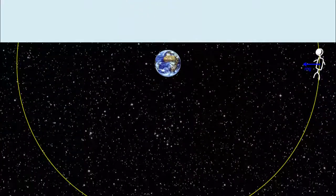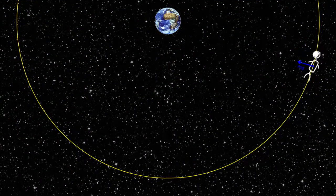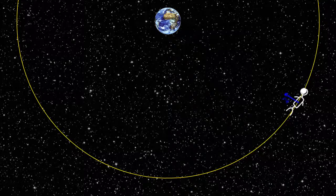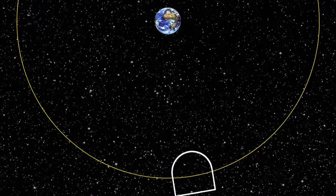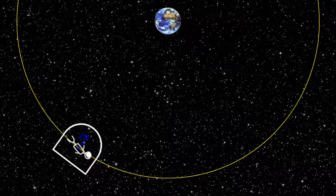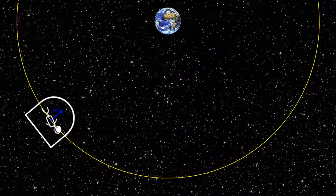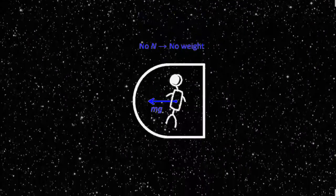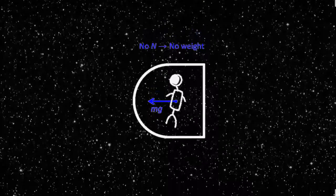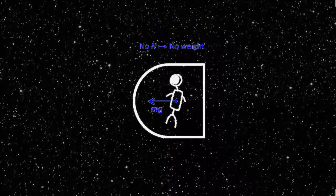We can also put an astronaut in circular motion a few hundred kilometers around the Earth. Imagine a spacecraft orbiting at the same altitude. Now imagine the astronaut in the orbiting spacecraft. The astronaut doesn't press into the walls of the spacecraft because the spacecraft is falling as fast as him. The astronaut is weightless.